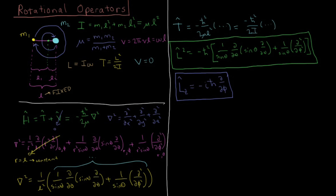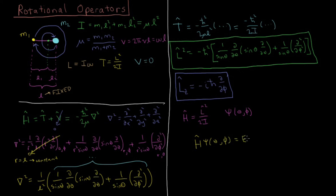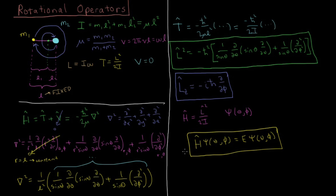The final Schrödinger equation for the rigid rotor system has a Hamiltonian equal to the L̂² operator divided by 2I. Since r is constant, the wave function depends only on θ and φ: Ĥ ψ(θ,φ) = E ψ(θ,φ), where Ĥ = L̂²/(2I). We will see next what the energy levels are when we solve this equation.